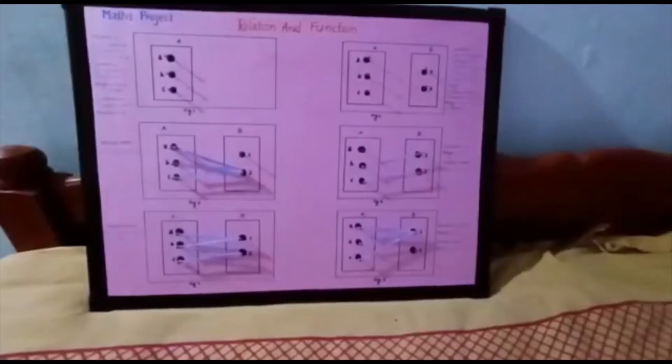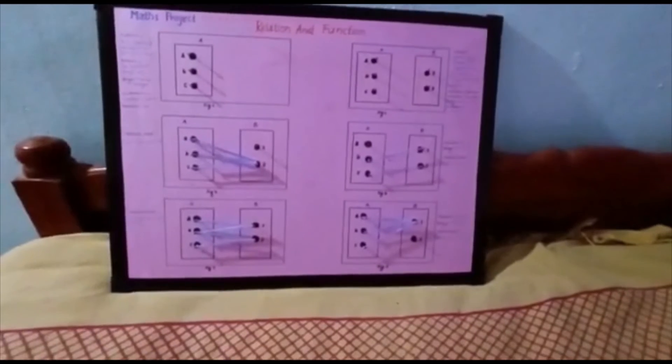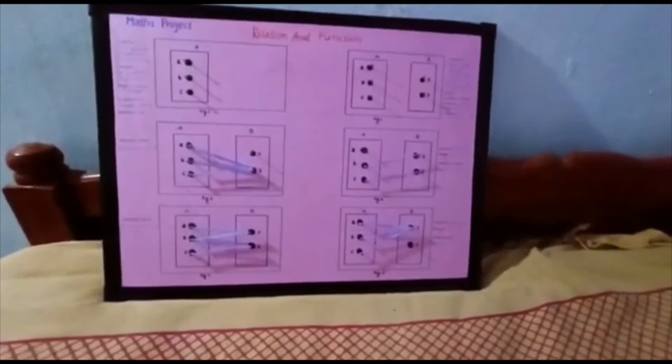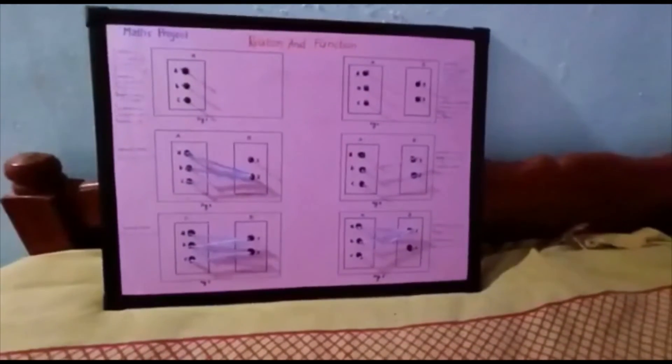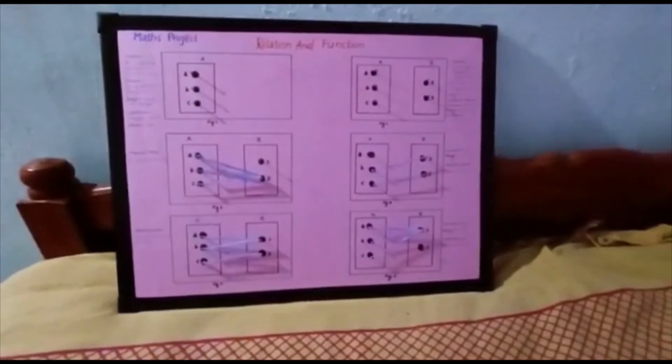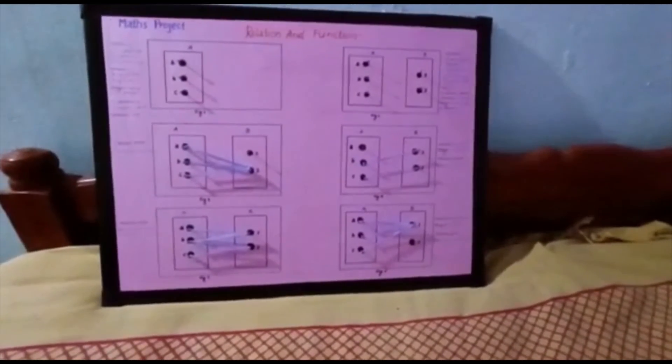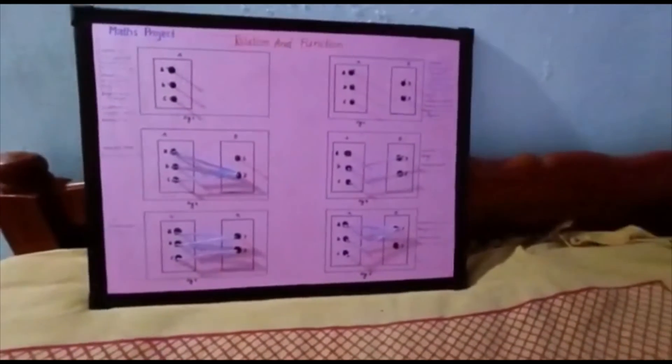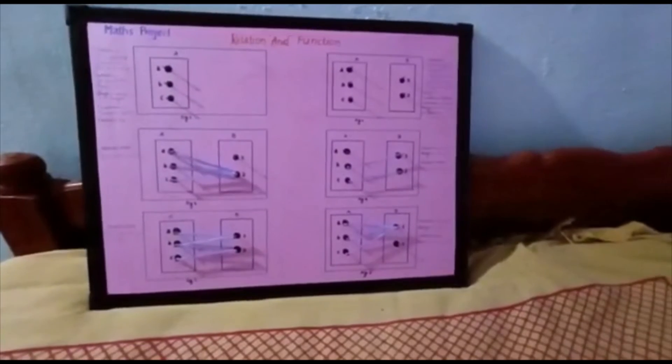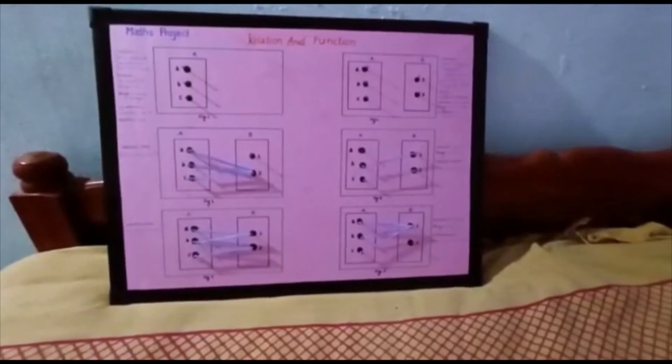From the above examples, we can say it is not necessary for all elements in set A and set B to be mapped. Also, it is not necessary for all relations between two sets to have unique images. From all the examples, we can conclude that all functions are relations, but not all relations are functions. Therefore, a function is a subset of relation.